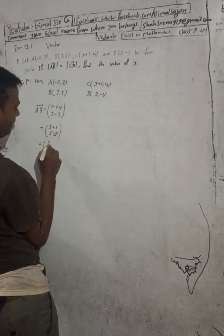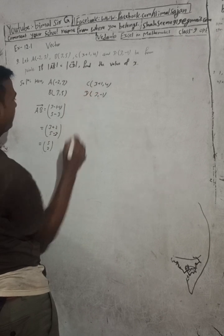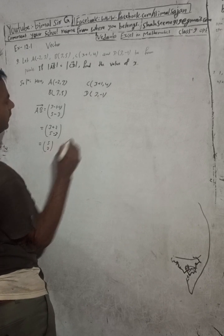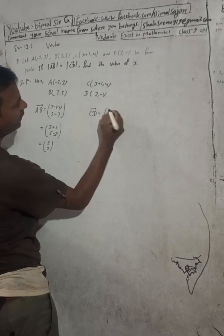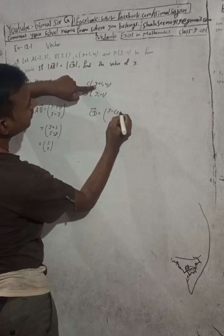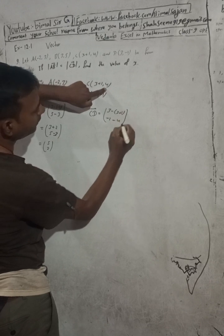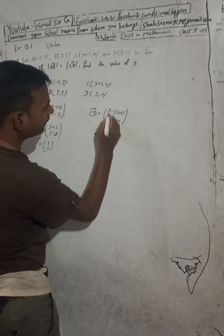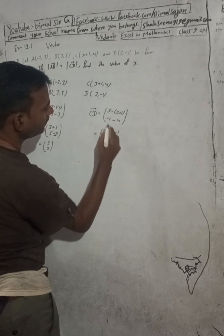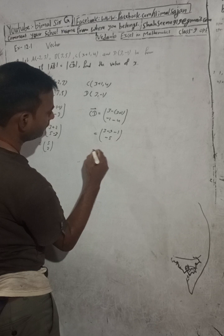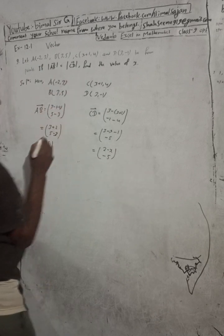Now find vector CD. Vector CD equals (3 - (x+1), -1 - 4) = (3 - x - 1, -5) = (2 - x, -5). So vector CD = (2 - x, -5).